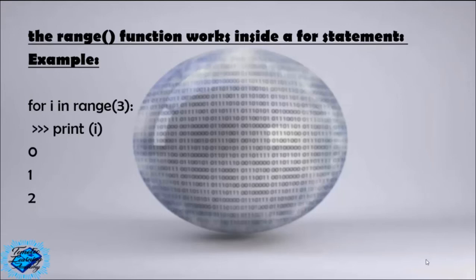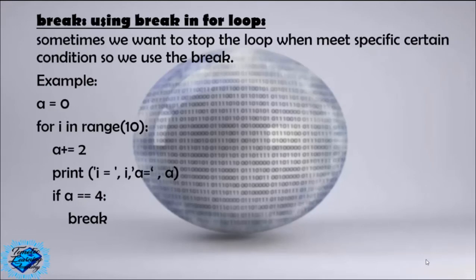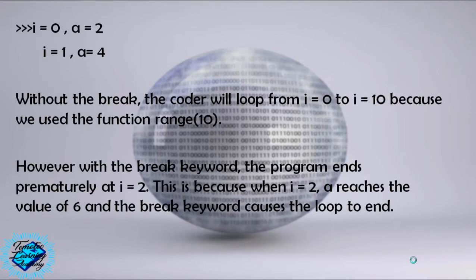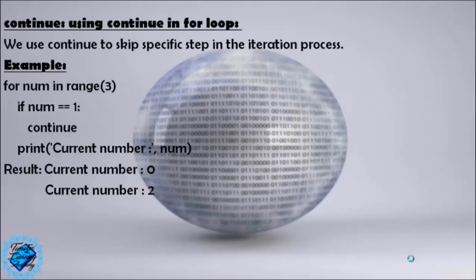Using break in a for loop — sometimes we want to stop the loop when certain conditions are met, so we use the break keyword. Example: a = 0. For index in range(10): a += 2; print(i, a). If a == 4: break. Result: i=0, a=2; i=1, a=4. Without the break, the loop would run from i=0 to i=9 because we use range(10). However, with the break keyword, the program ends prematurely at i=1 when a equals 4 and the break causes the loop to end.